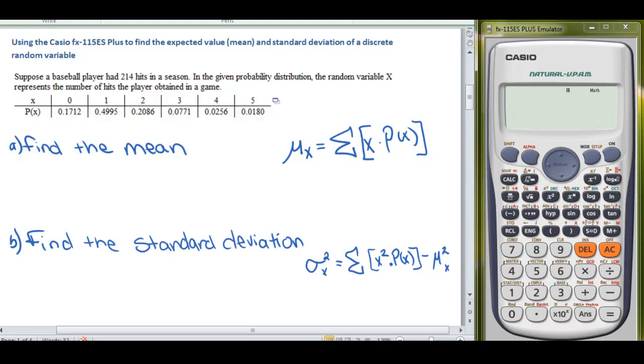The probability for having no hits is going to be 0.1712. The probability for one hit in a game is 0.4995, so on and so forth. So we have our x and we have our p of x.